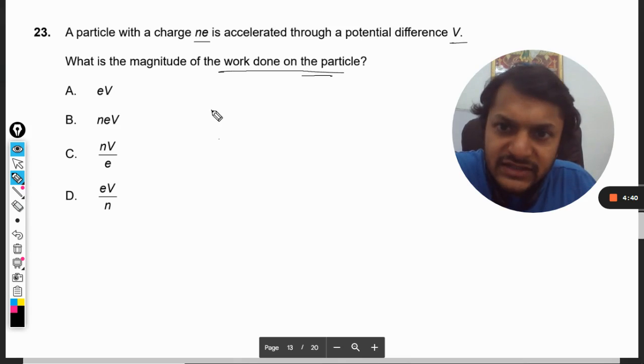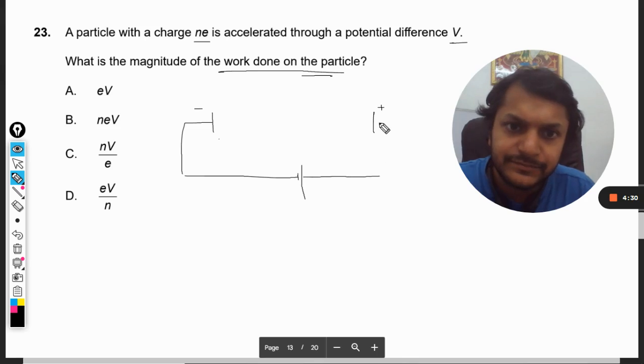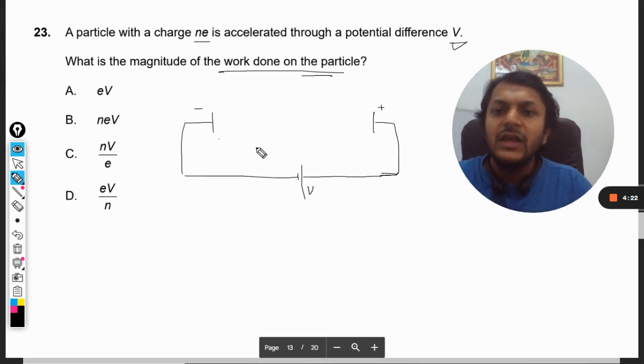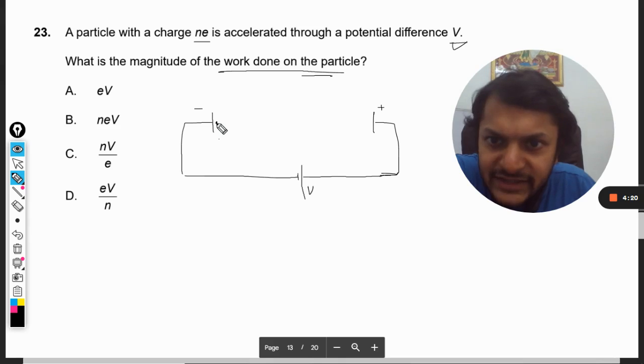This means there are two electrodes here, one positive and another negative, connected with a battery. The voltage difference is V, and there is an electron at this point.